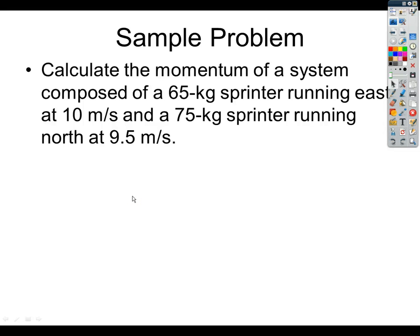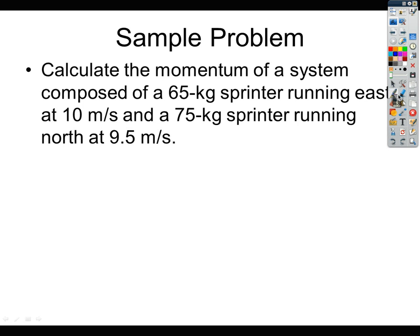This is the next example for momentum. In this example you have a system of two runners. We have one sprinter that's 65 kilograms going east at 10 meters per second, and another one, 75 kilograms, running north at 9.5 meters per second.